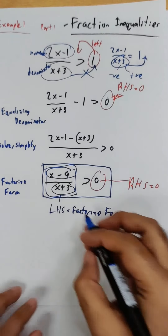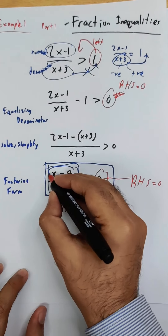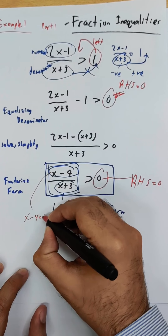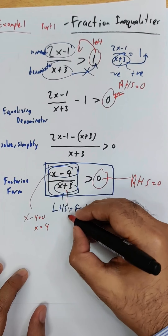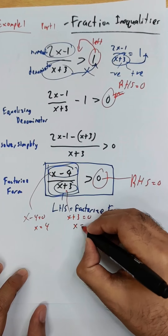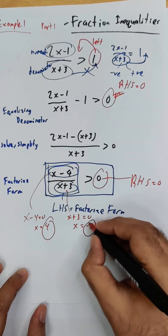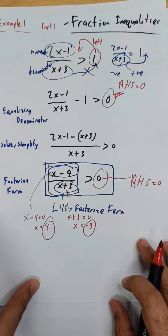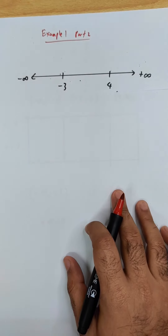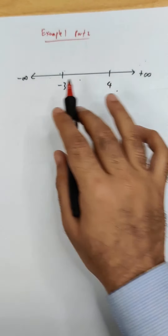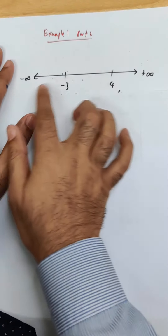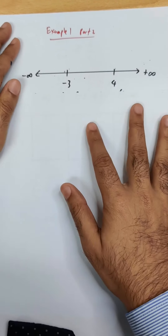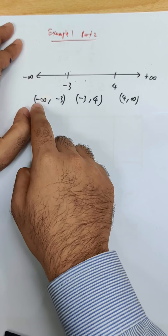Now for part two. From x minus 4 equals zero we get x equals 4, and from x plus 3 equals zero we get x equals negative 3. We want these values 4 and negative 3. Moving on to part two, we draw a number line with negative infinity and positive infinity and place negative 3 and 4 on it.